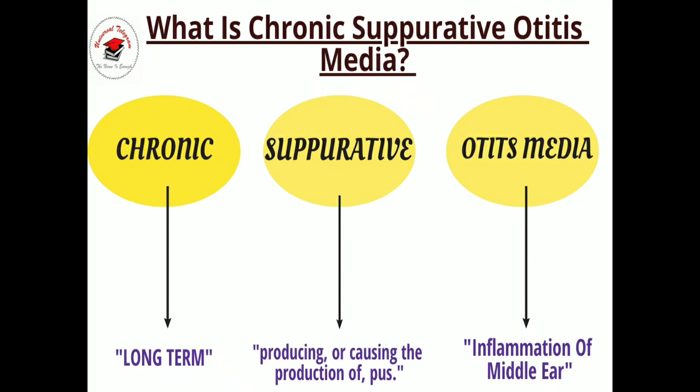What is Chronic Suppurative Otitis Media? We can get the idea about its name: 'chronic' means long term, 'suppurative' means producing or causing the production of pus, and 'otitis media' means inflammation of the middle ear. So the production of pus, i.e., suppuration, can be seen in the middle ear cavity as an inflammatory process in a chronic form.